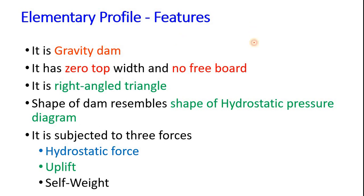Elementary profile of a dam features. Elementary profile of a dam looks like a right angle triangle. It is a gravity dam because resisting force is the weight of the dam itself. The forces acting on it are hydrostatic force and uplift force which cause overturning, and weight is the only resisting force. So it is a gravity dam because it resists all these forces with its own weight.